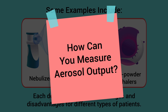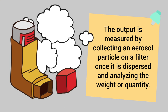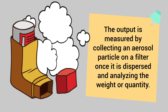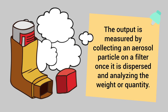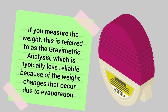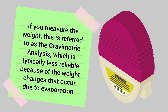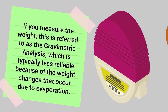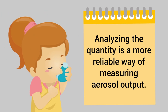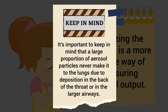Aerosol output is measured by collecting an aerosol particle on a filter once it is dispersed, and then analyzing the weight or quantity. If you measure the weight, this is referred to as gravimetric analysis, which is typically less reliable because of the weight changes that occur due to evaporation. Analyzing the quantity is a more reliable way of measuring aerosol output.